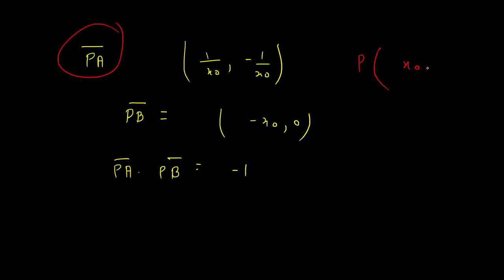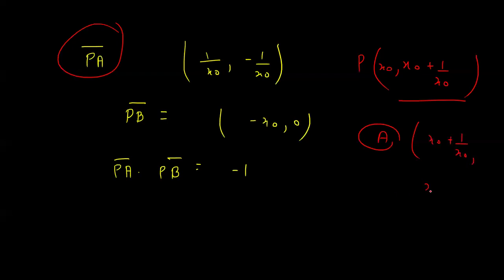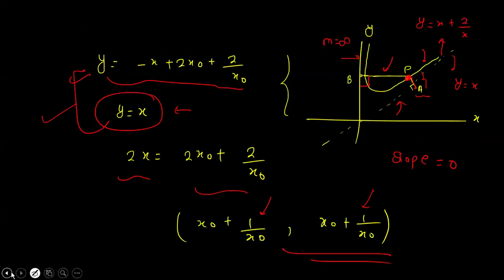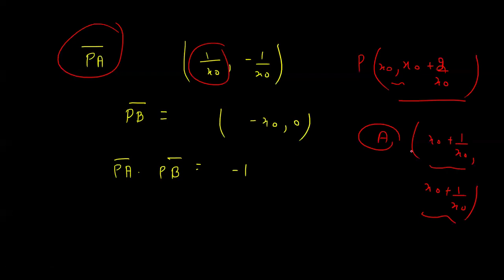Now we know: P = (x₀, x₀ + 2/x₀) and A = (x₀ + 1/x₀, x₀ + 1/x₀). The vector PA = A − P, so the x-component is 1/x₀ and the y-component is (x₀ + 1/x₀) − (x₀ + 2/x₀) = −1/x₀. So PA = (1/x₀, −1/x₀).